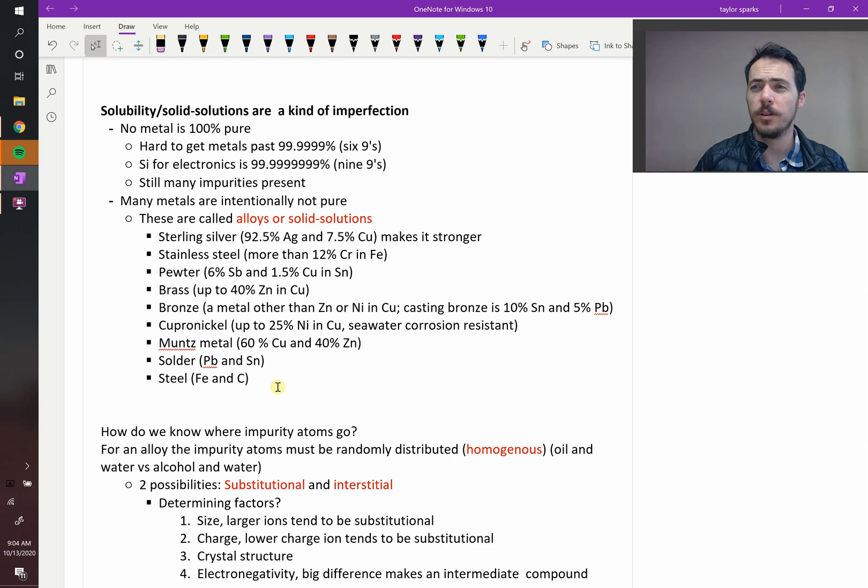Alright, let's talk about solubility and alloys for a minute. When we think of solid solutions or solubility in metals, these are also a type of imperfection. Instead of having a completely pure lattice, you have something else added to it, some other atoms. The truth is, almost no metal is 100% pure.